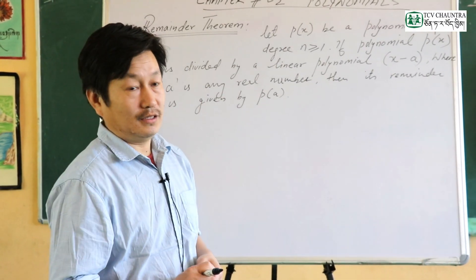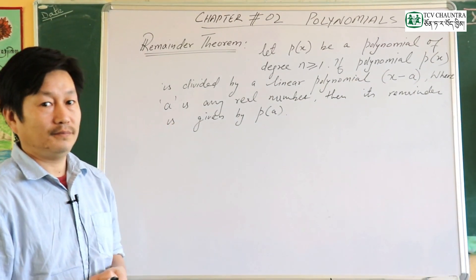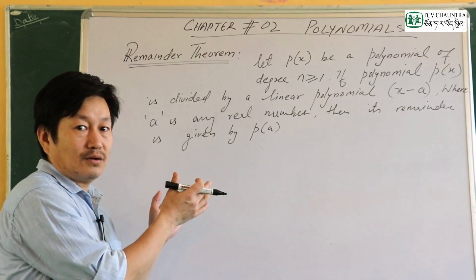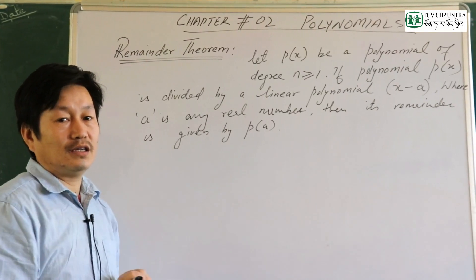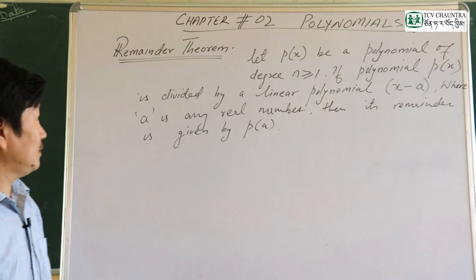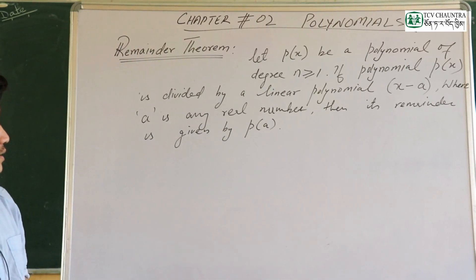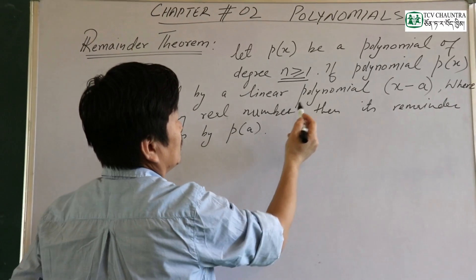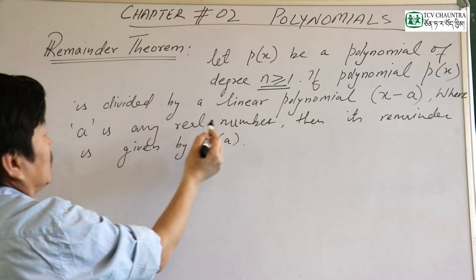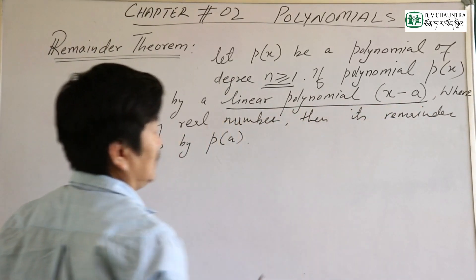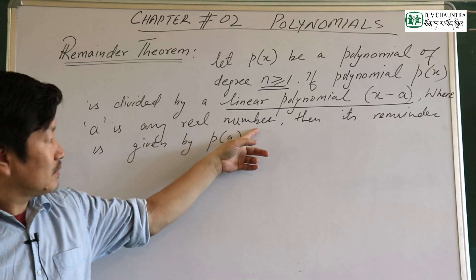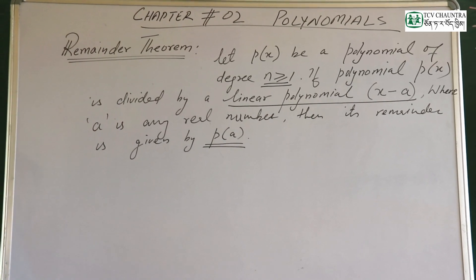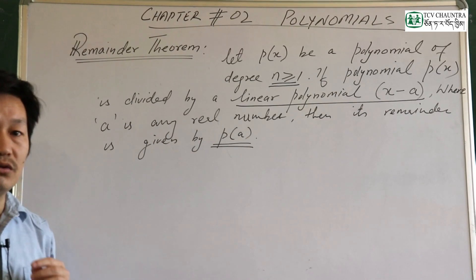The main topic is the Remainder Theorem. Let p be a polynomial of degree n greater than or equal to 1. Then if p is divided by a linear polynomial x minus a, where a is any real number, then its remainder is given by p of a. We also need to talk about the division algorithm.